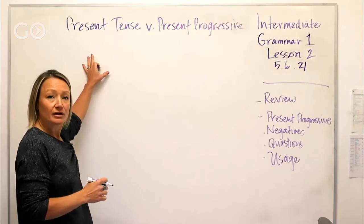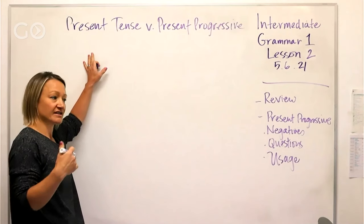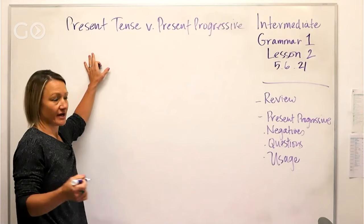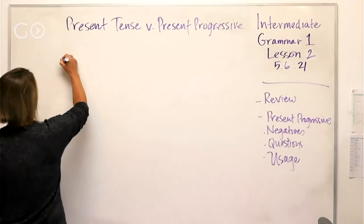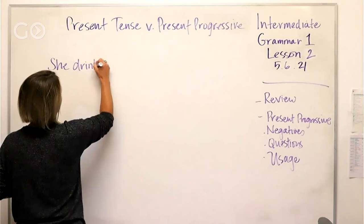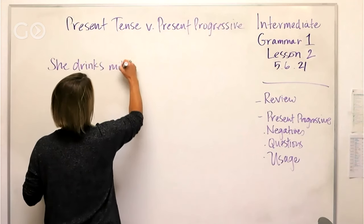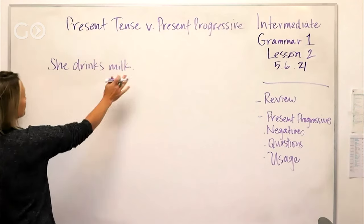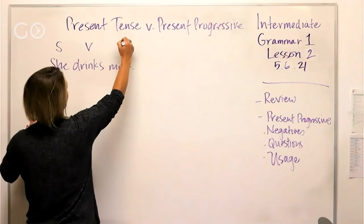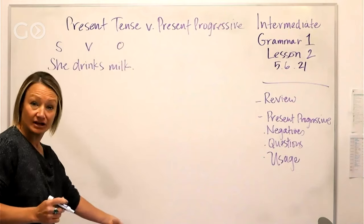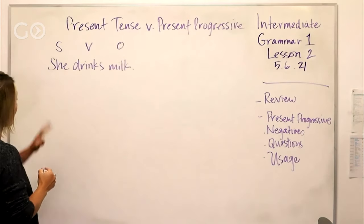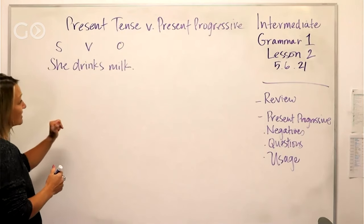Remember, we use the simple present tense to talk about things we do regularly or often. Example: 'she drinks milk.' It's a very simple tense. You've got your subject, verb, object — that's the order of all English sentences. Subject, verb, object. That's simple present tense.